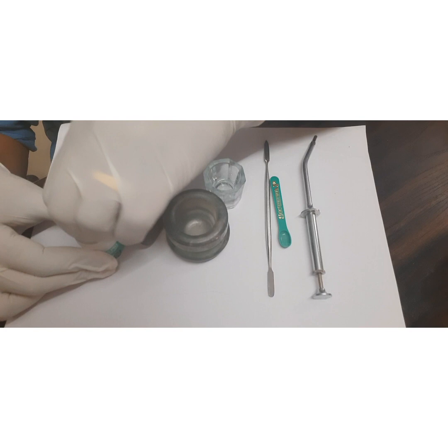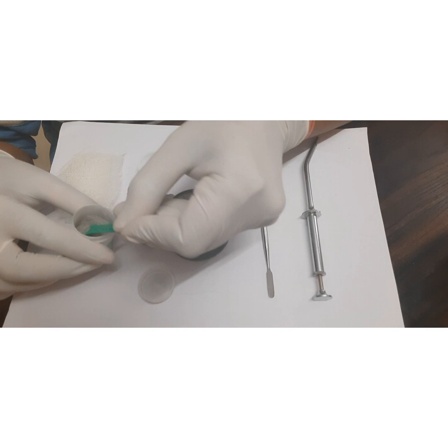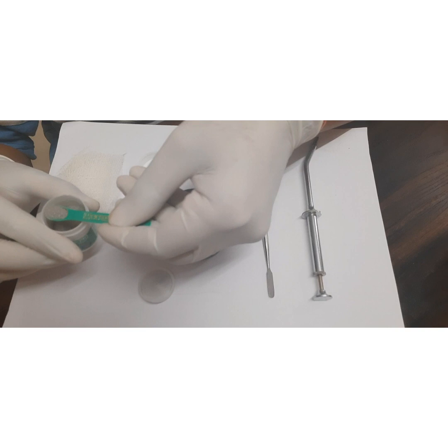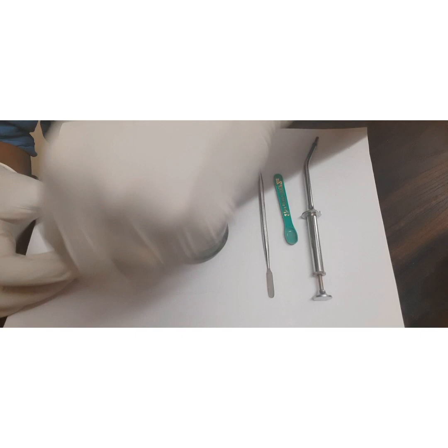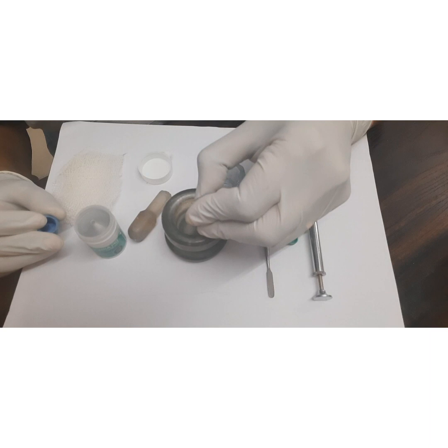Now what we have to do is take a prescribed quantity of alloy powder. The amount of alloy powder you will be taking depends on how big the cavity you want to fill is. So we will take one spoon of this and accordingly we will be taking mercury.